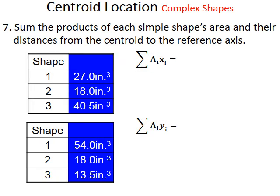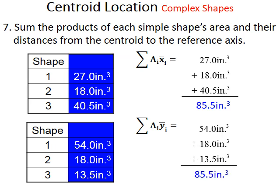We're not quite done yet. What we need to do to finish getting the number for our numerator is add all those together. Remember, the Greek letter sigma means to add all of those components. We want to keep the x's together and the y's together. When we add 27 plus 18 plus 40.5, we get 85.5 cubic inches. When we add everything for y, we also get 85.5 cubic inches.